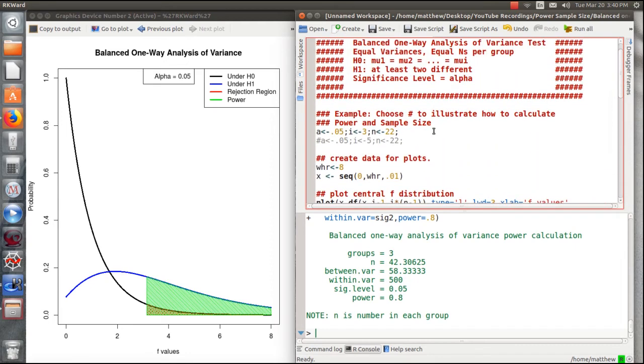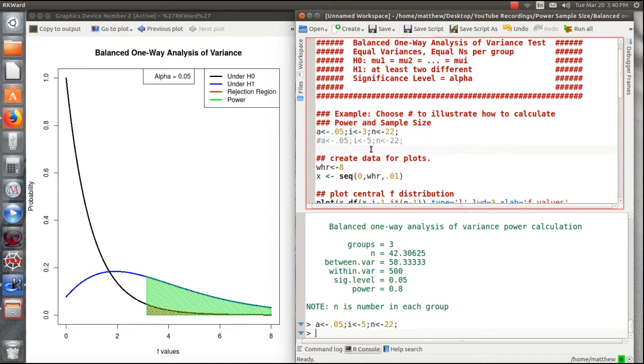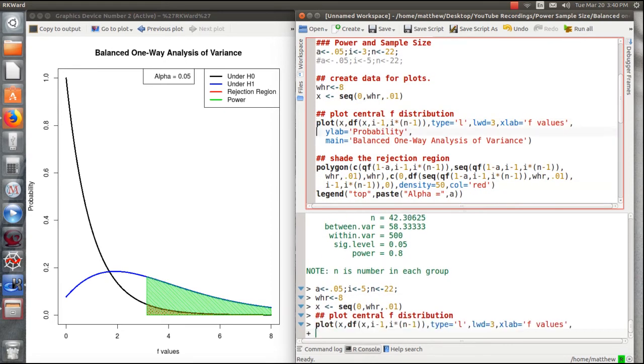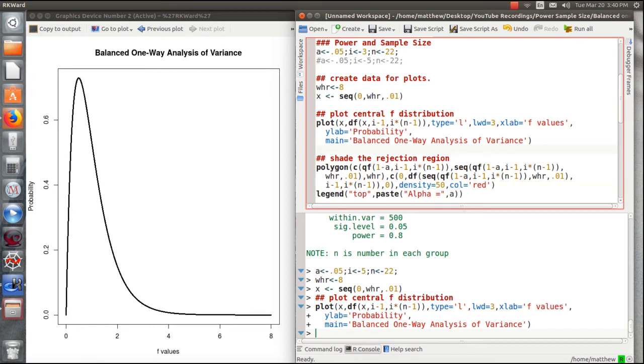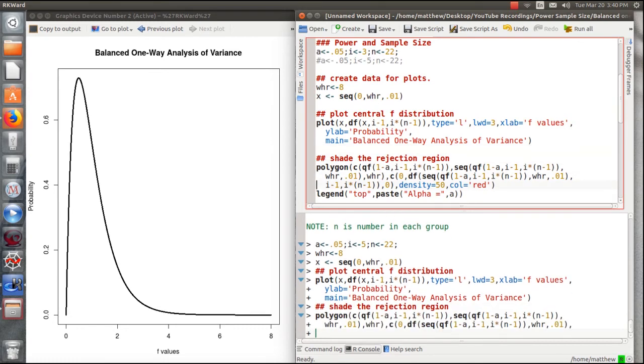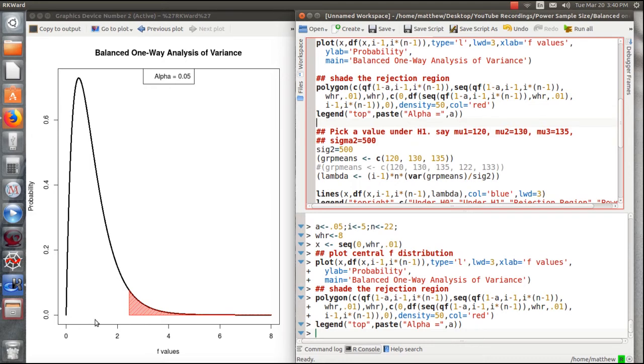And here we're going to say that we have five groups. Same alpha, 22 observations per group of the five groups. Let's look at the central F distribution now, and that's this, and let's calculate the rejection region for it. So now we calculate our test statistic, and here's the rejection region. If a test statistic value falls in here, we reject. If it doesn't, then we don't. And now let's assume the alternative is true. So then we have to pick group means that make the alternative true.